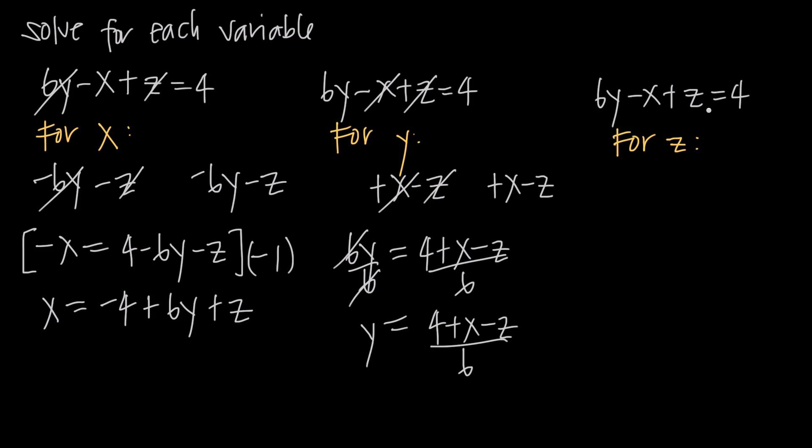We have z over here on the left-hand side. We need to get rid of the y term and the x term. So we'll go ahead and subtract 6y and add x to both sides. We'll get positive 6y and negative 6y and negative x and positive x to cancel, leaving us with just z on the left.